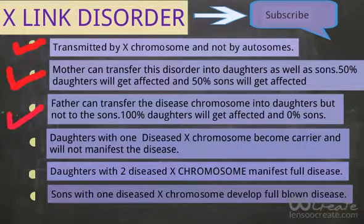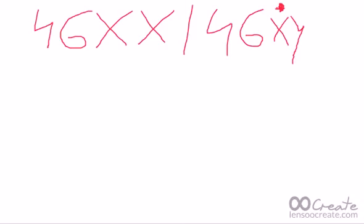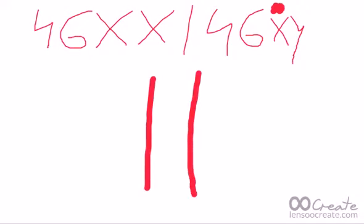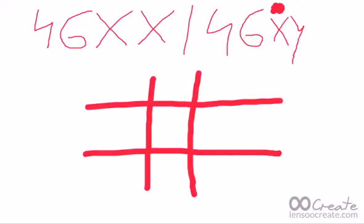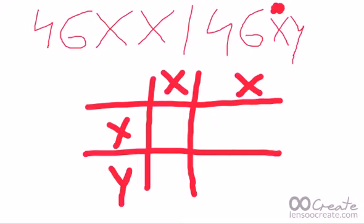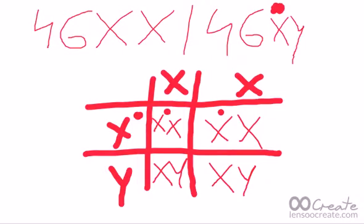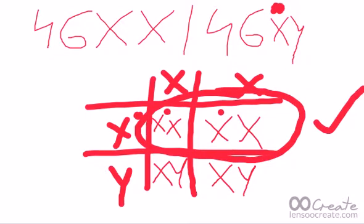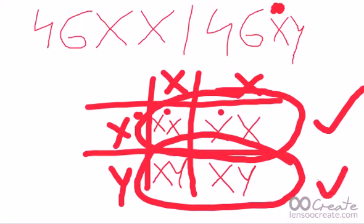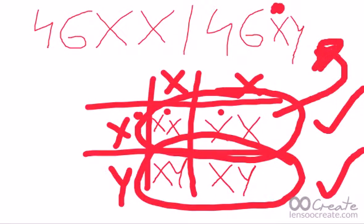Understanding this on the whiteboard — if the problem is with the father's X chromosome, represented with a dot, I make the checkerboard again and place mother's and father's chromosomes. The result is that 100% of daughters will get affected and 0% of sons will get affected. So if the problem of the X chromosome is with the father, no son will receive it.